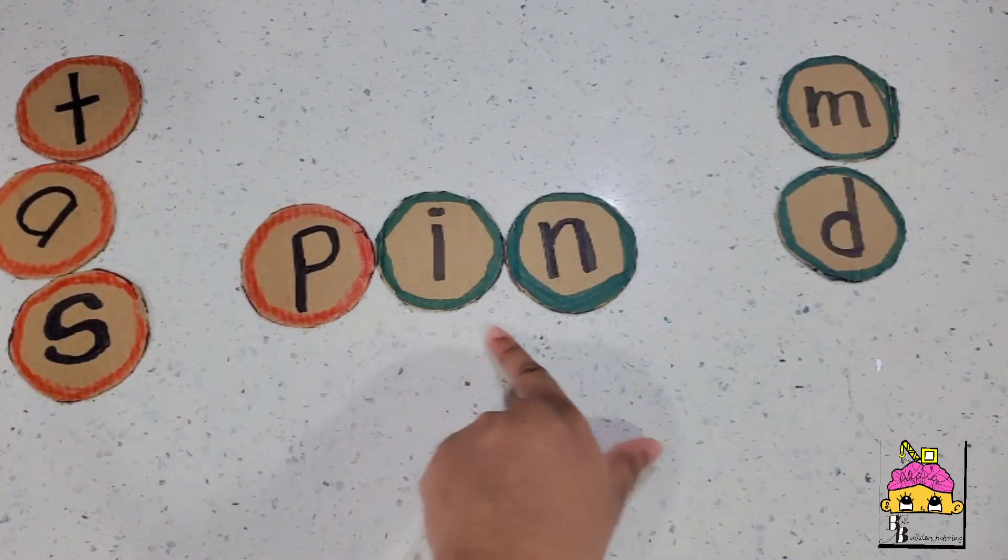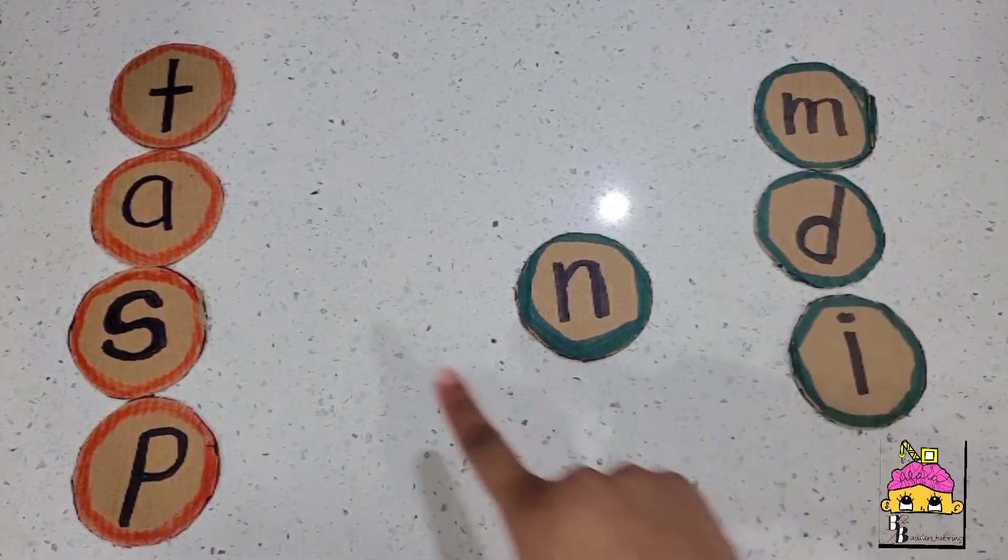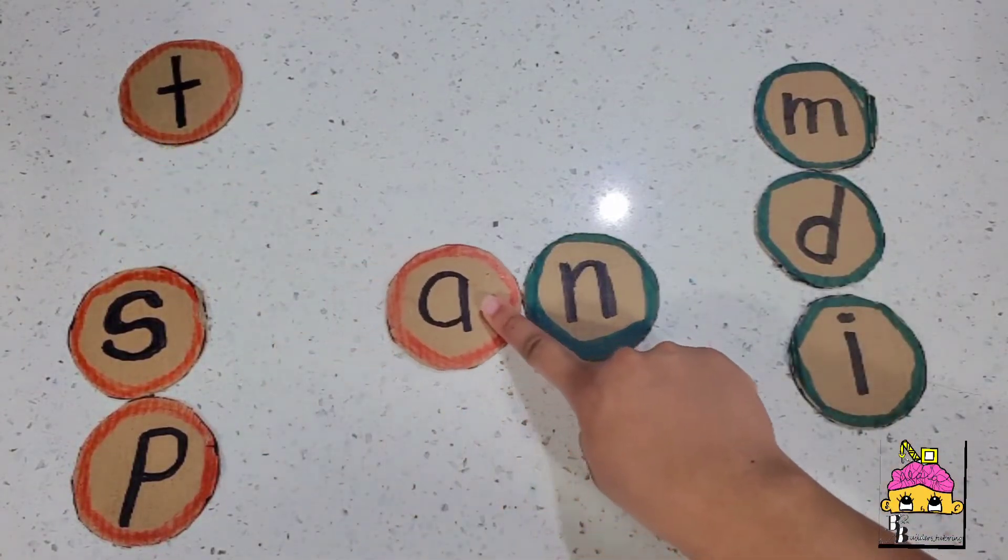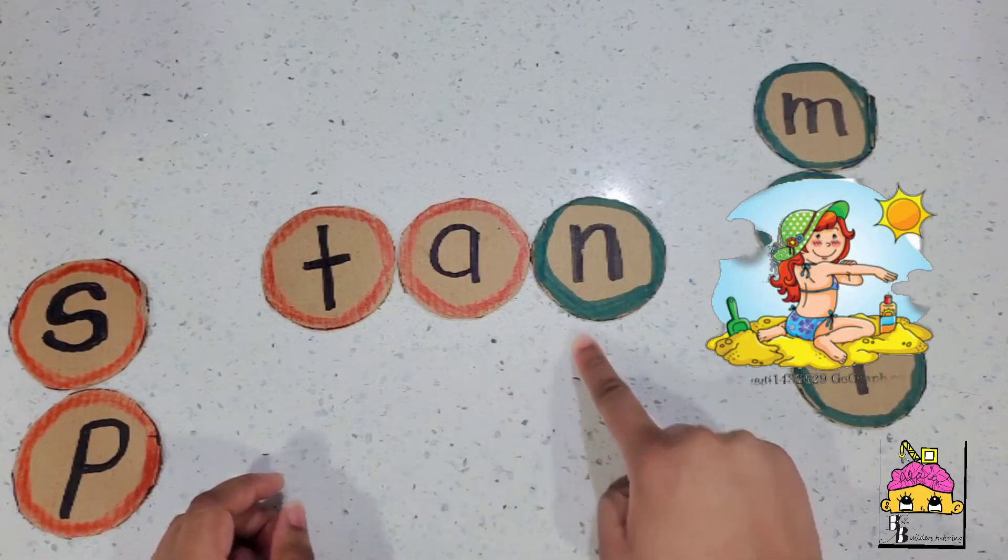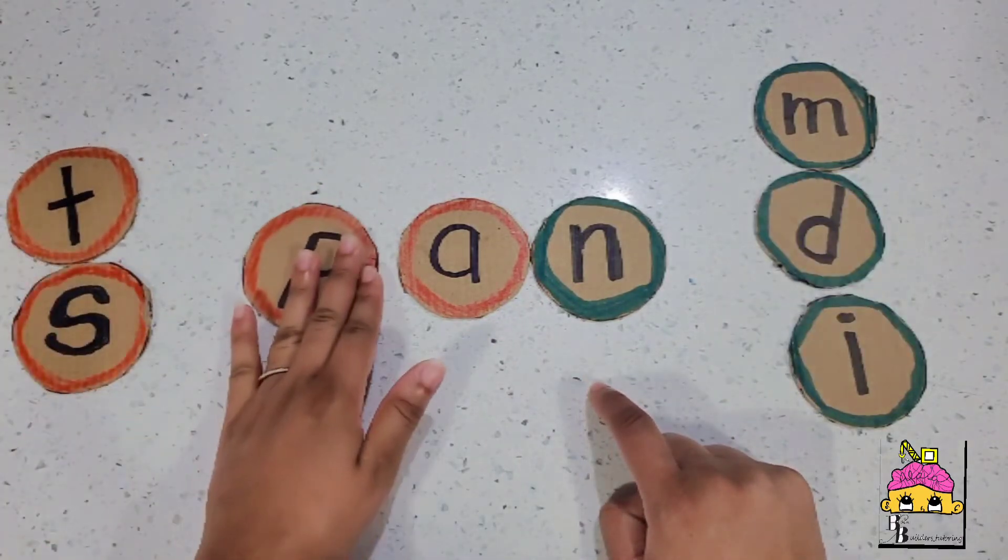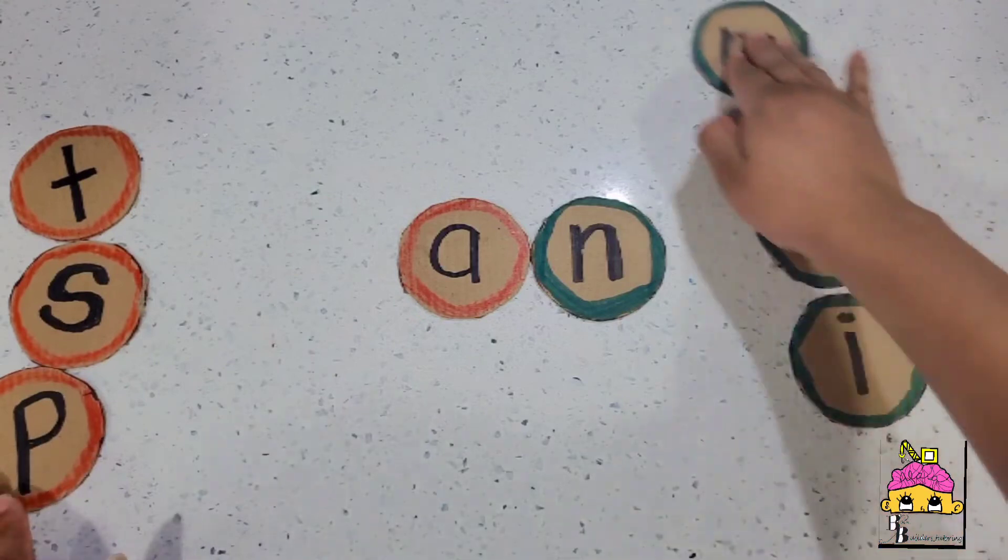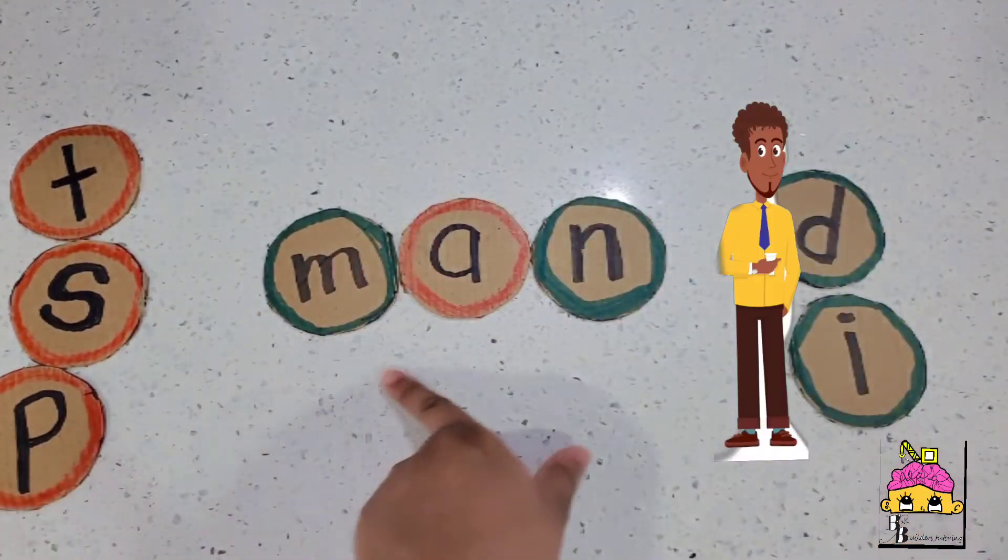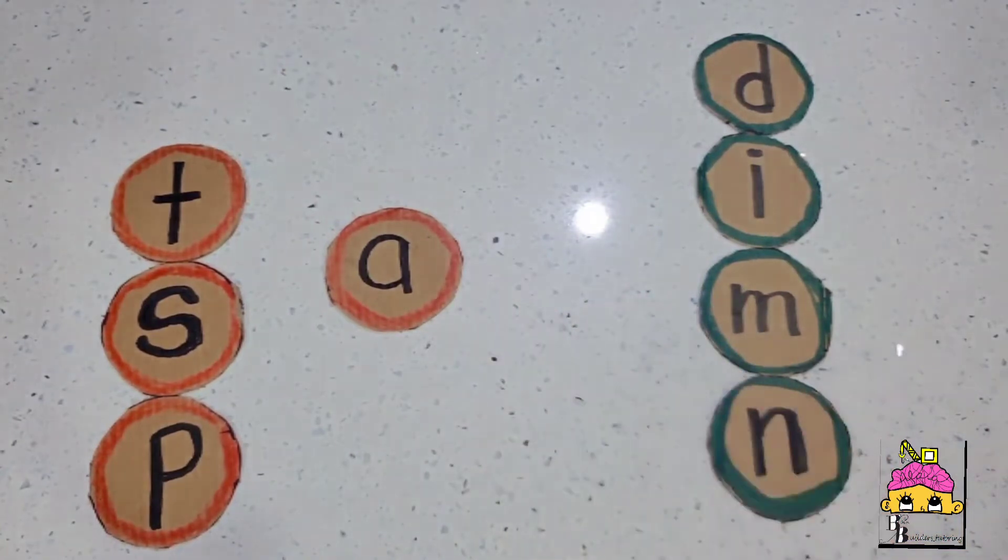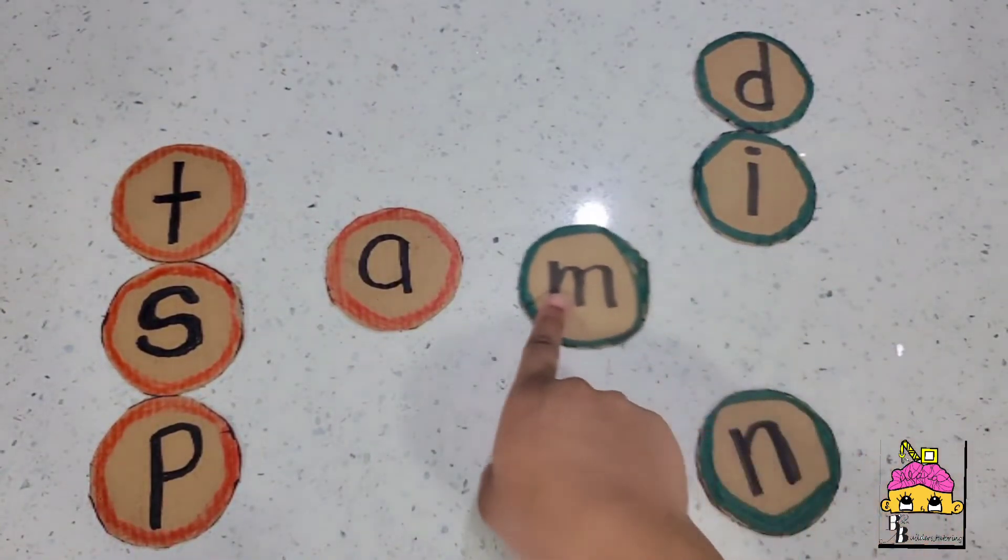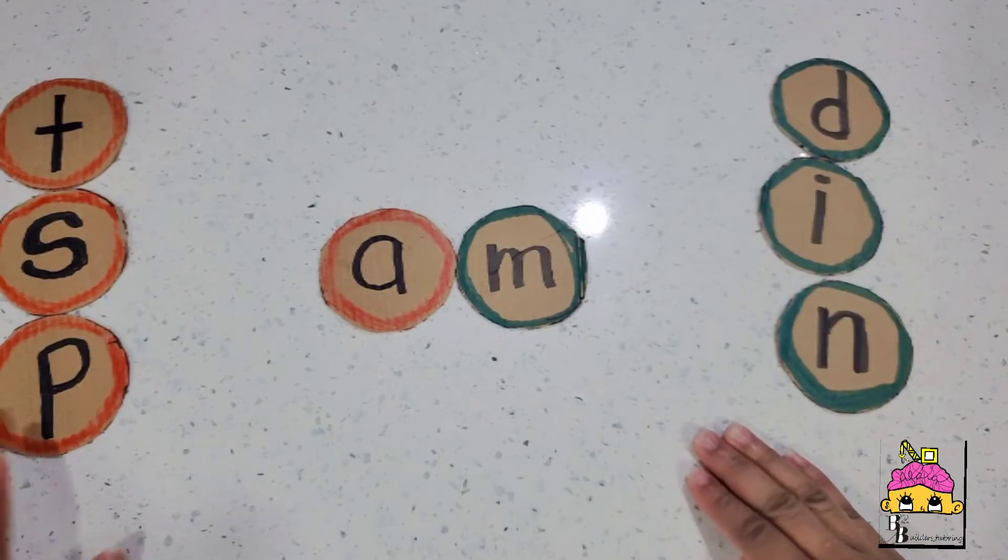Next we can do A, N words. An, tan, pan, man. Next we'll use M, um. Let's see what words we can make with um.